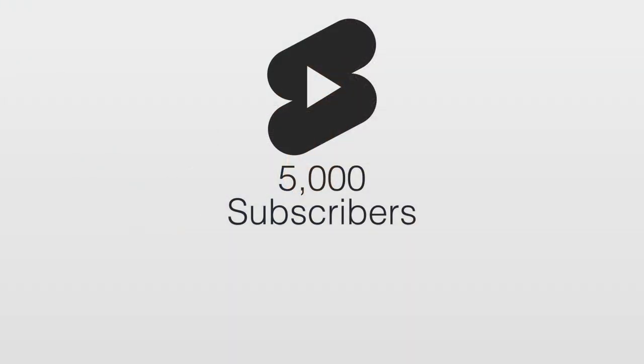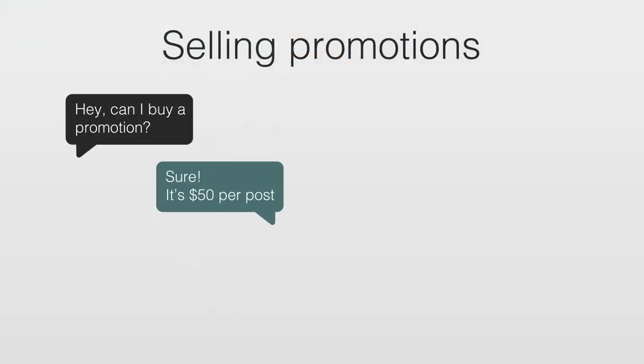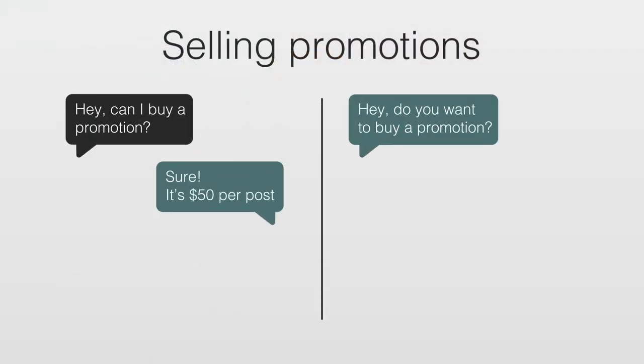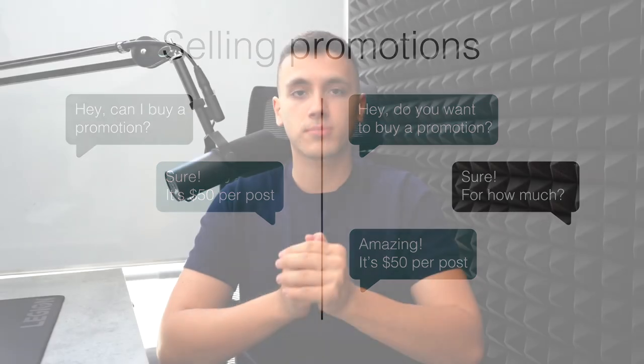Number four is promotions. You and I are not the only people interested in short content or YouTube automation, so once you build an audience of even 5,000 to 30,000 subscribers depending on the niche, you can start making money through promotions. People in the same niche with YouTube automation channels will reach out — or you can reach out to them — to promote their channel or brand, and you can get paid anywhere from $50 to $500 per post just by driving traffic to other people's content.